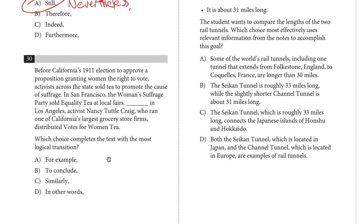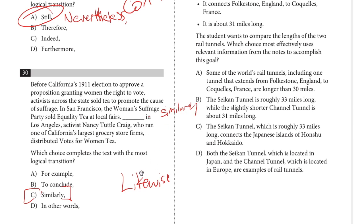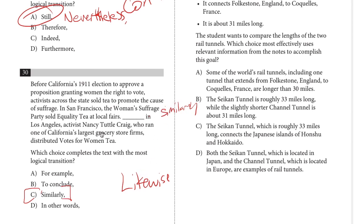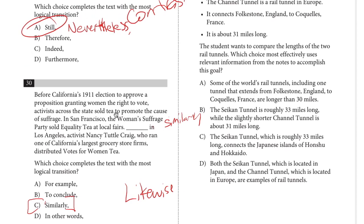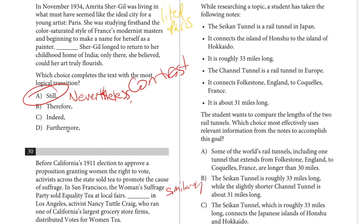Number thirty, another transition word: before California's 1911 election to approve a proposition granting women the right to vote, activists across the state sold tea to promote suffrage. In San Francisco, the Women's Suffrage Party sold equality tea at local fairs; blank — in Los Angeles, activists distributed 'Votes for Women' tea. This is a similar example, so the answer is 'similarly.' You could also say 'likewise.' Think of groups of transition words and how they're used.